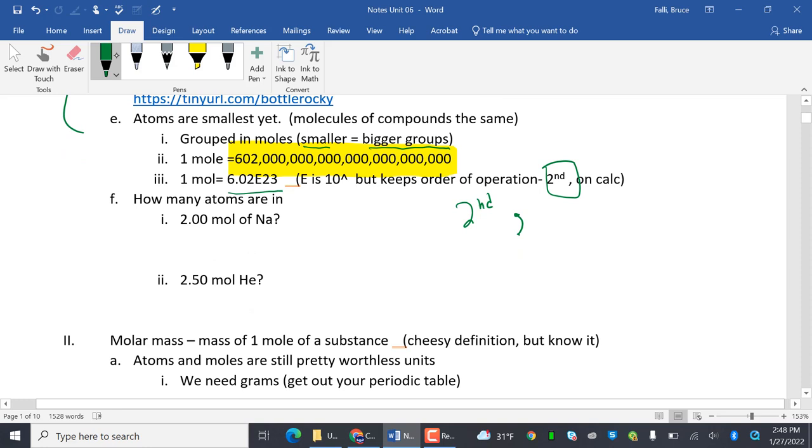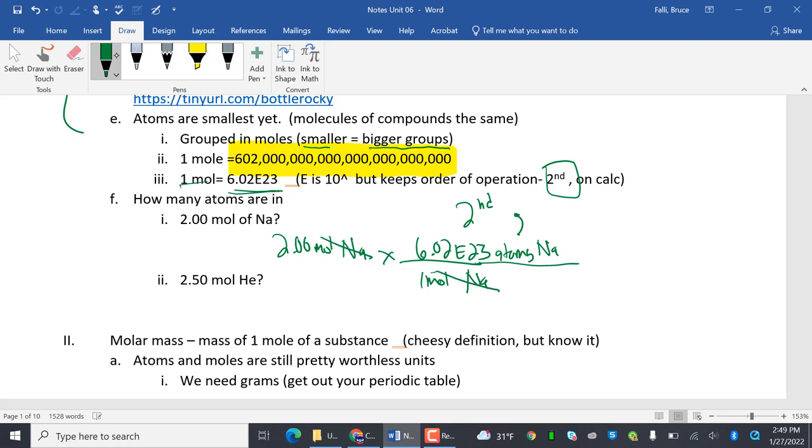So how many atoms are in 2 moles of Na? I got 2 moles of Na, and I want to convert it. Remember I said 1 mole is 6.02 times 10 to the 23rd? So all I'm going to do is multiply it times 6.02 times 10 to the 23rd. And then to make it all come out pretty, we show this to show how the units cancel. See how moles of Na would cancel, and atoms of Na would be left over. So I get 1.204 when I put in my calculator.